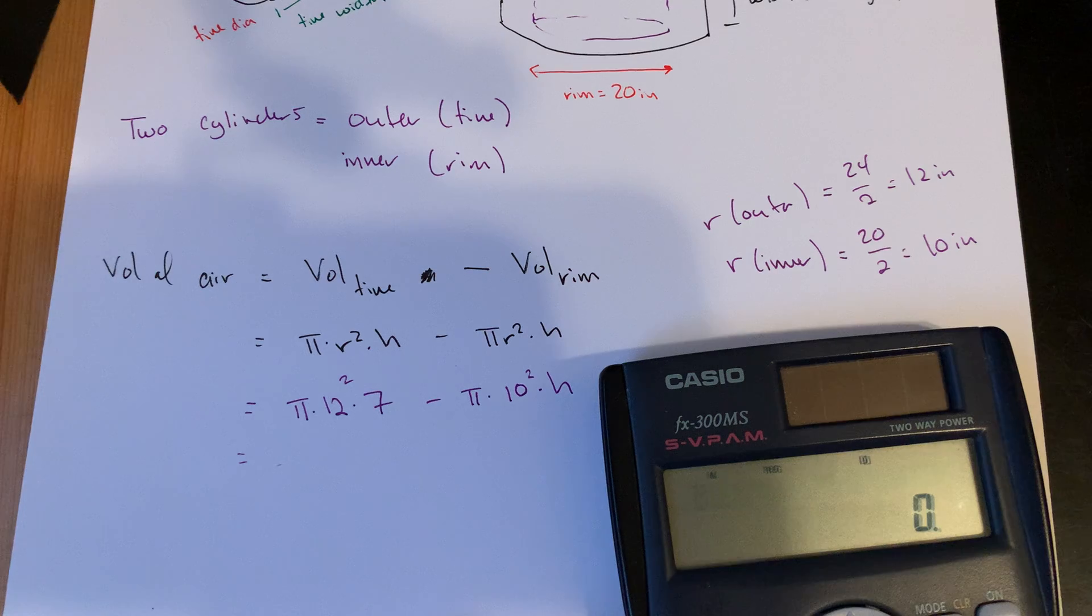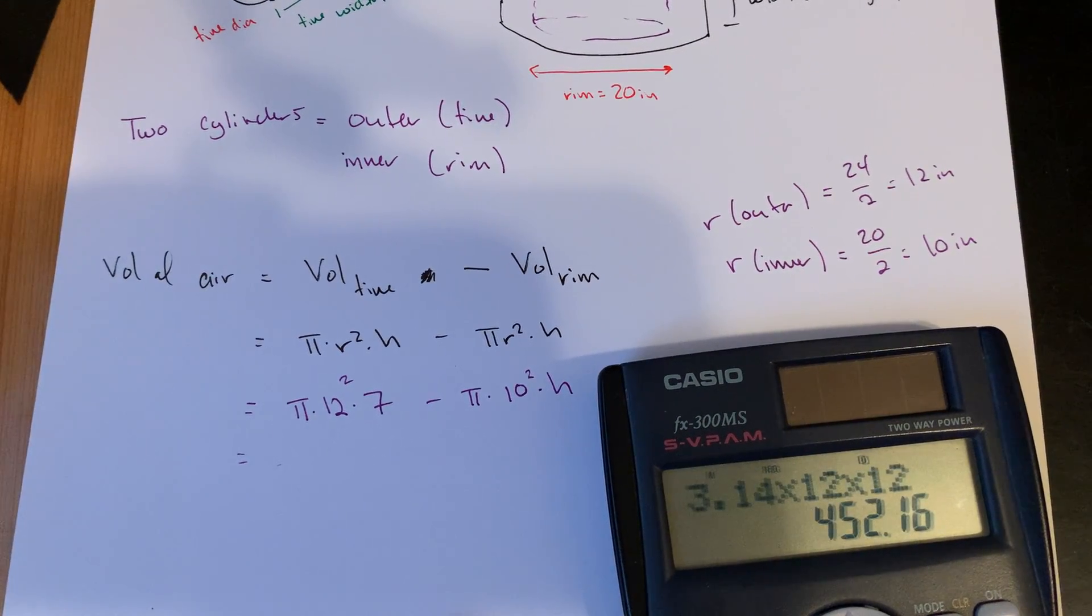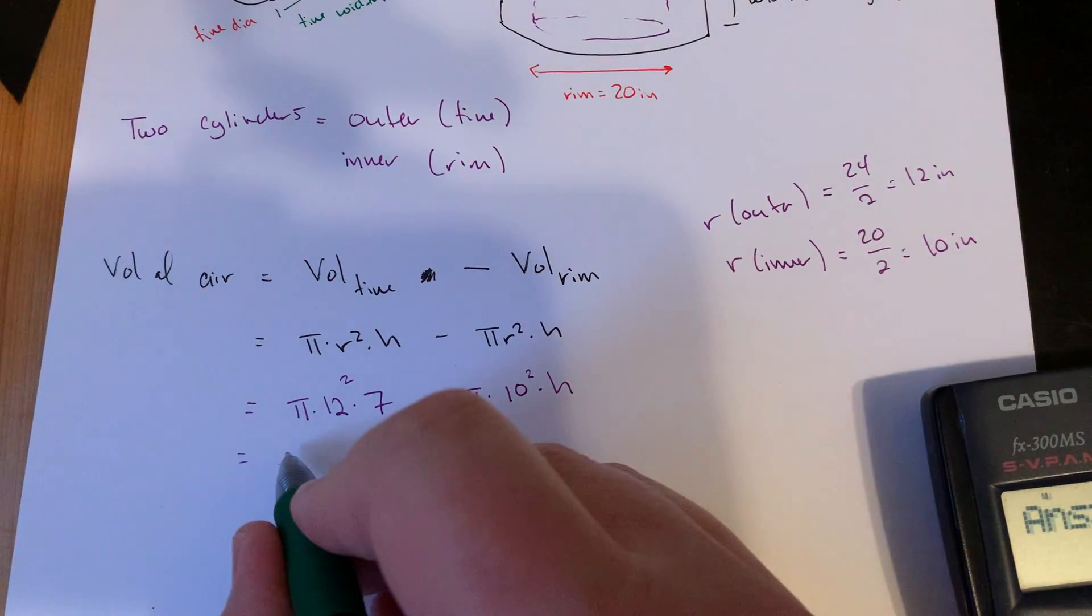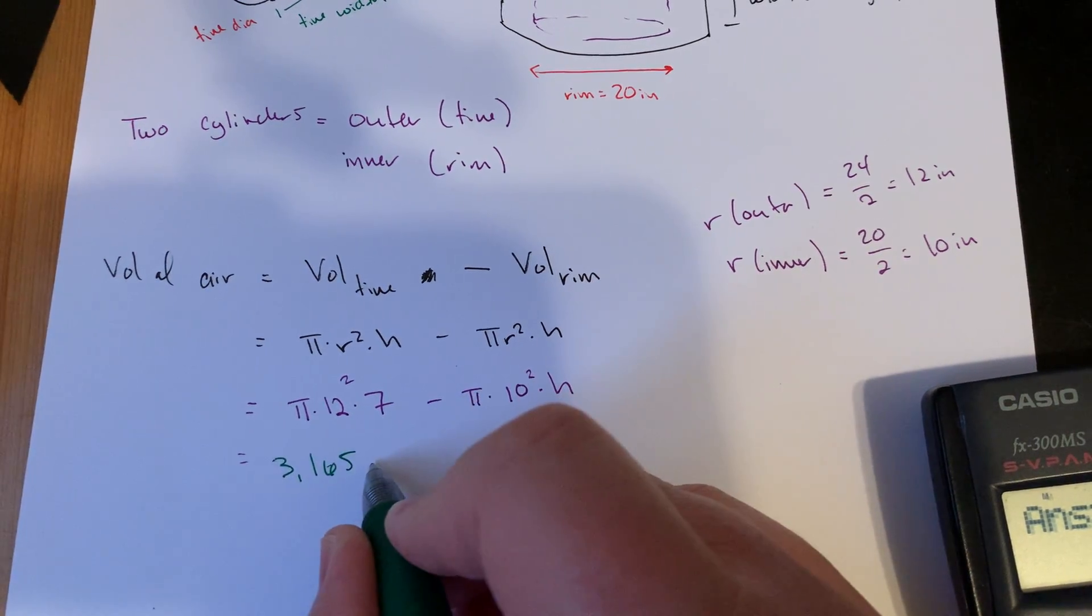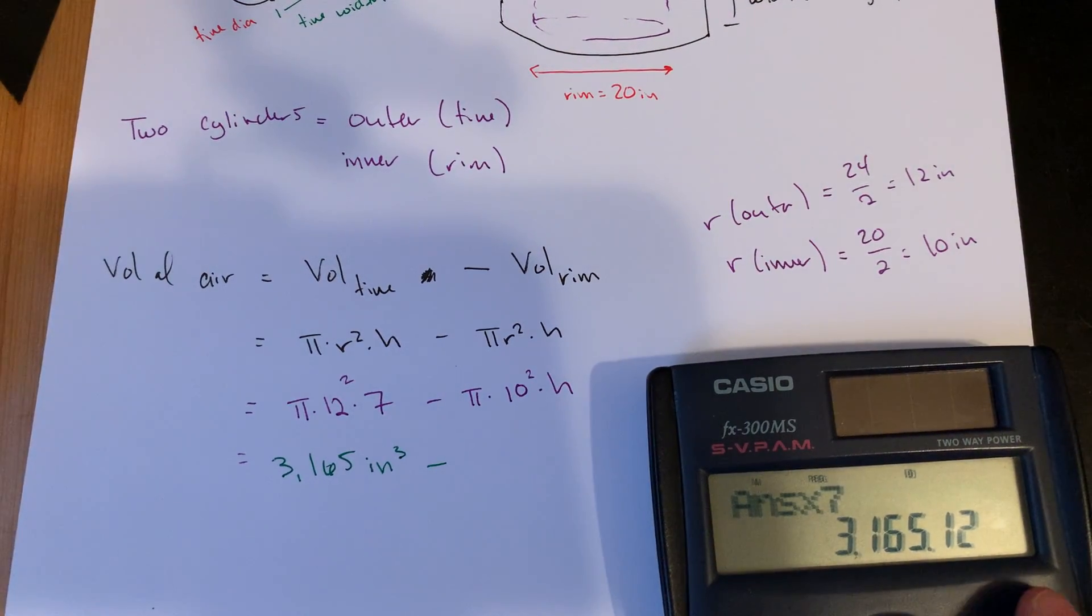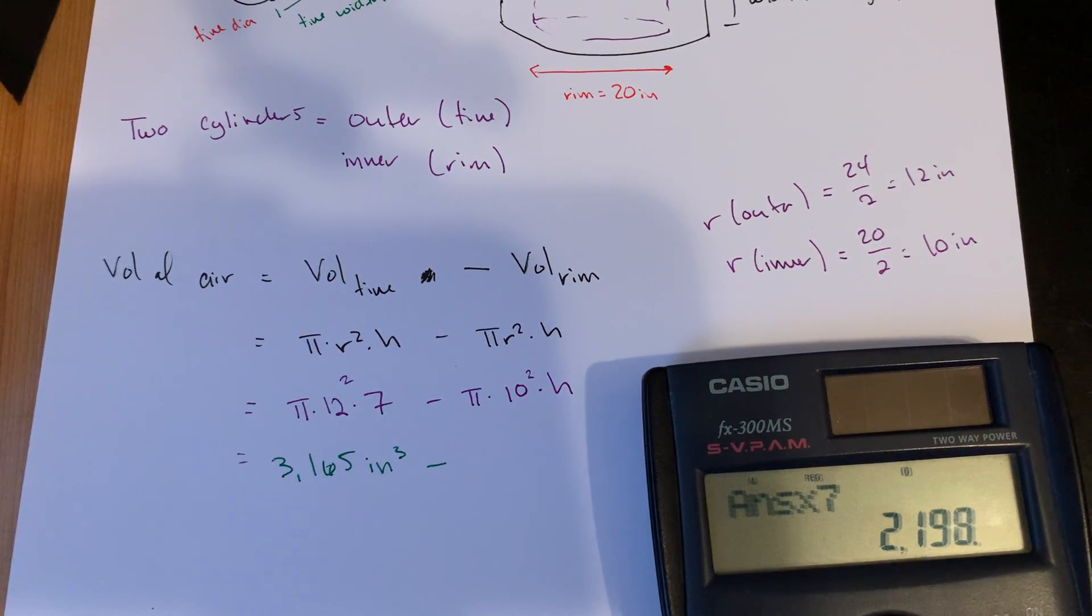What do we got? 3.14 times 12 times 12 times 7. 3.14 times 12 times 12 equals times 7, 3,165. Let's just call it 3,165. This is all inches, so cubic inches.